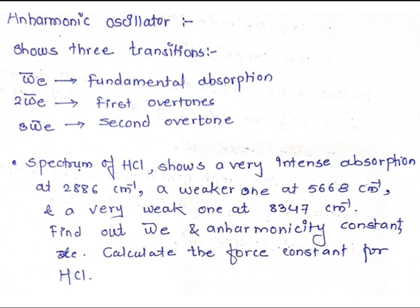The most intense line corresponds to the transition from the ground state to the first excited state, since the population at the ground state is maximum, giving higher intensity. Its absorption value is 2886 cm⁻¹. The weaker absorption is observed at 5668 cm⁻¹.